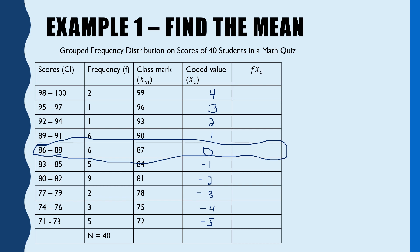Then we will multiply the frequency by the coded value. So: 2 times 4 equals 8; 1 times 3 is 3; 1 times 2 is 2; 6 times 1 equals 6; then 0; 5 times negative 1 is negative 5; negative 18; negative 6; negative 12; and negative 25.